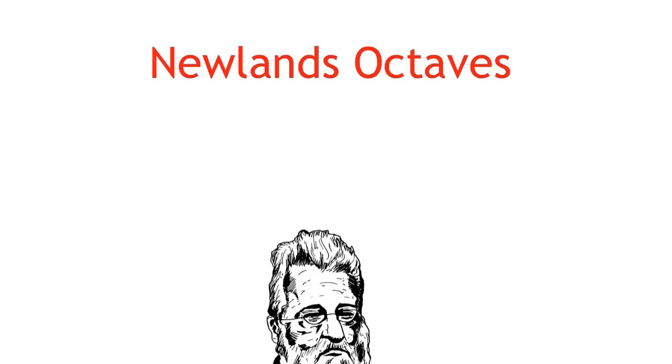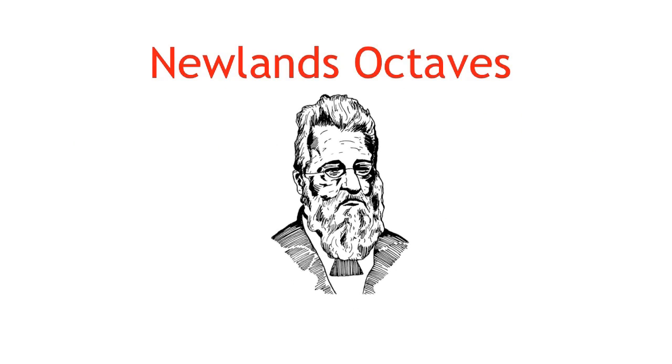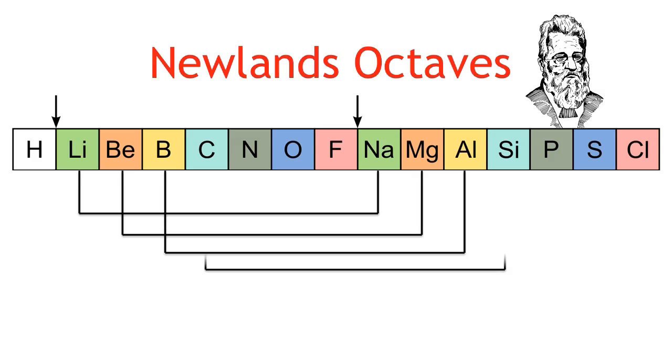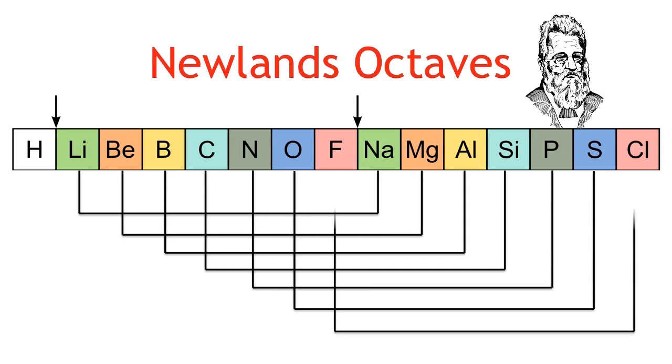Fifty years later came Newland's octaves. Newland noticed that when the elements are arranged in order of their atomic weight, every eighth element had similar properties. So, he listed some of the known elements in rows of seven.